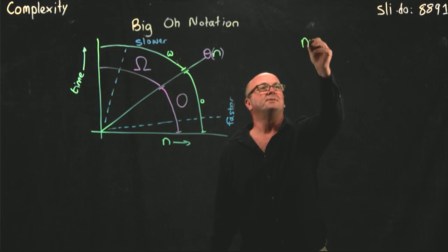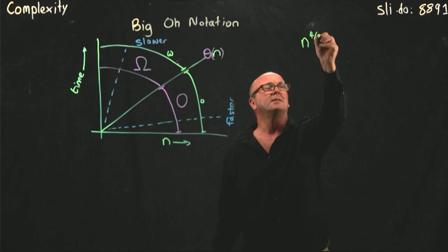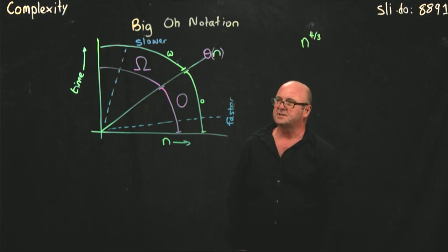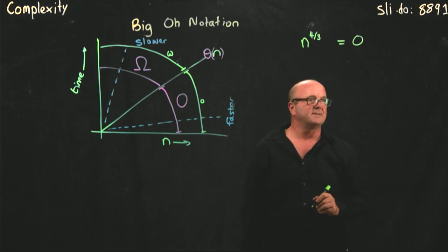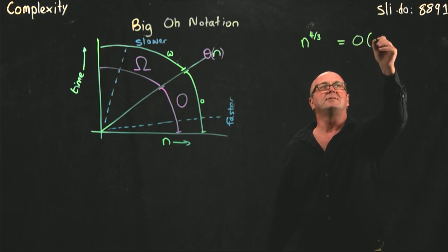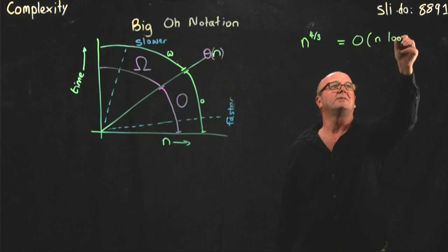So, here's a question for you. If I have a function that grows at the rate n to the 4 over 3, is that a member of the set of algorithms that grow with complexity n log n?